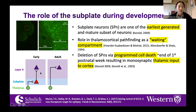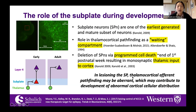Layer four is a layer of the cortical plate that one of the papers I took inspiration from for my thesis was focusing on. During early development, the thalamus relays its inputs to the subplate, and subplate neurons catch and relay them to the cortical plate. Throughout development, subplate neurons undergo apoptosis and it becomes a more monosynaptic thalamic input from the thalamus to the cortex. In lesioning the subplate, the hypothesis is that thalamocortical afferent pathfinding may be aberrant, which may contribute to the development of abnormal cortical cellular distribution potentially reflected in schizophrenia.